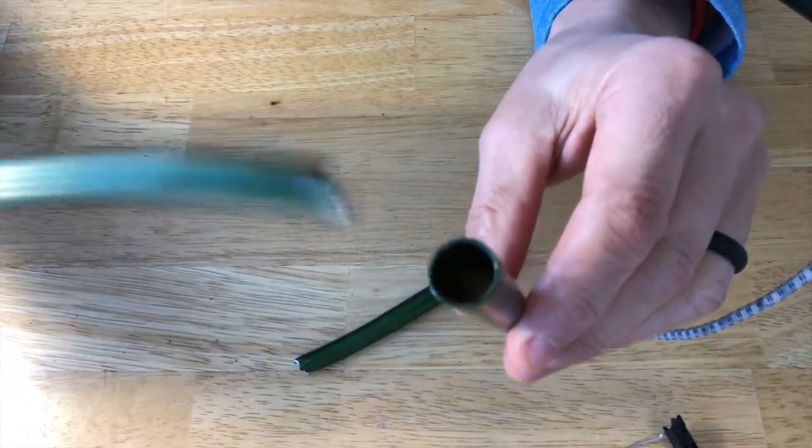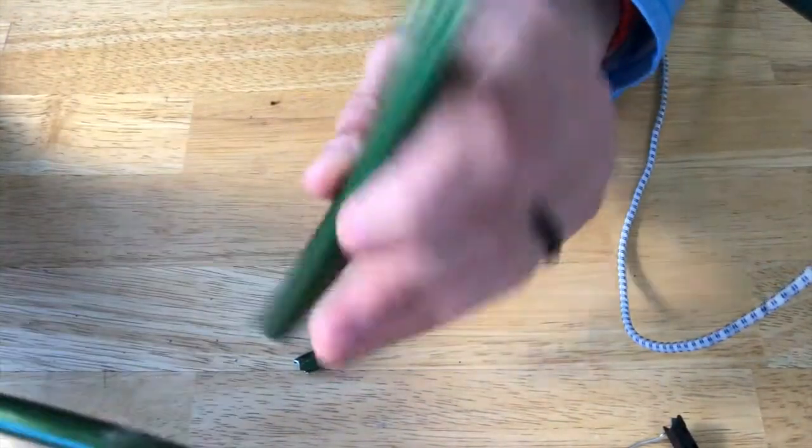In preparation for this repair, I contacted MSR and let them know that I needed to purchase a new pole segment. This tent is a little bit older, a 2011-12 model of Hubba Hubba, and so I was kind of concerned do they even have poles left over.